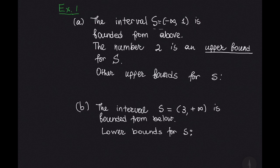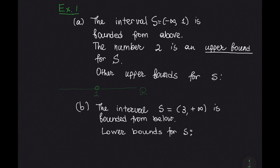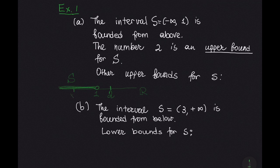Let us consider some examples. Let s be the interval from negative infinity to 1. This set is bounded from above and the number 2 is an upper bound. On the real line, if 1 is here, the interval (−∞, 1) — with 1 not included — lies to the left of 1. So if we take the number 2, then for any element x in s, x ≤ 2. So clearly 2 is an upper bound for s.